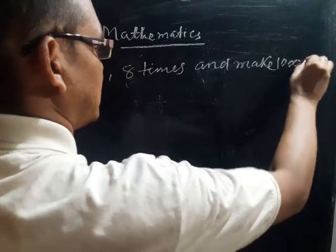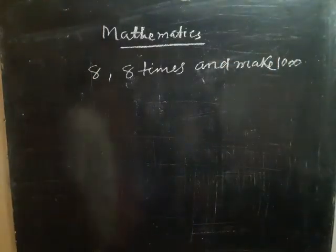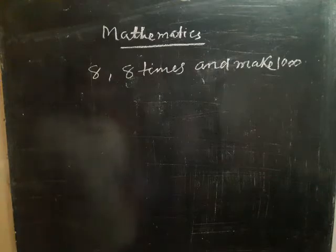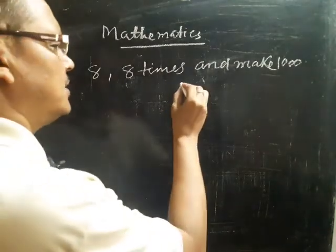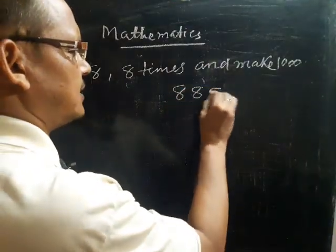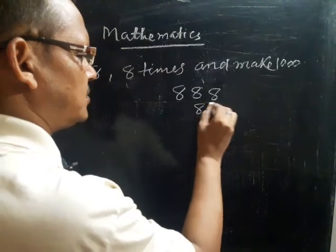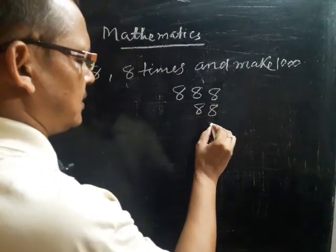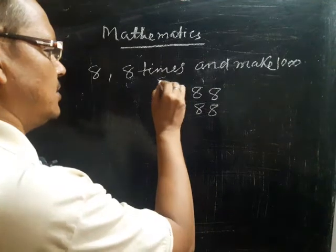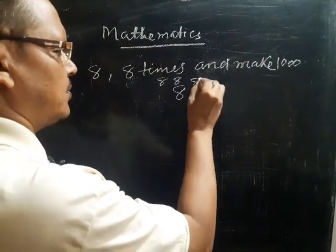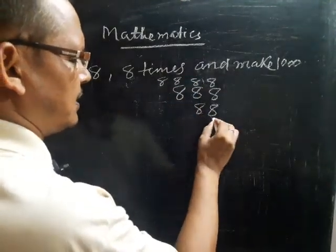How do you make this? You will take eight, eight times, and make one thousand. Very simple. You first write it three times, two times here, and also here four times, and finally...